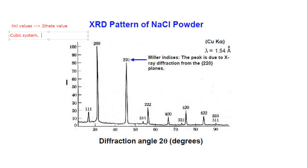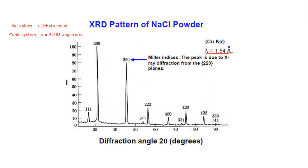The a-axis is about 5.463 angstroms — that's the length of the unit cell. We know it's copper radiation because the 1.54 angstrom radiation tells us it's copper.